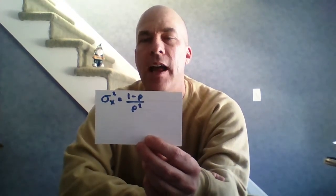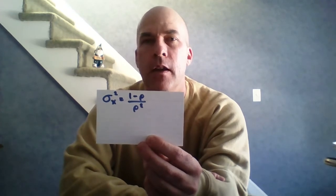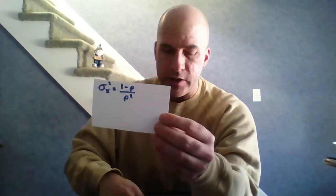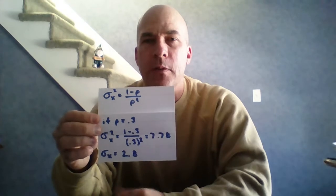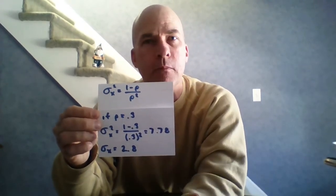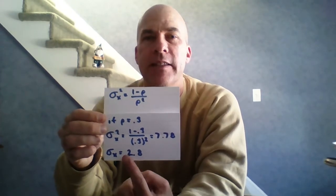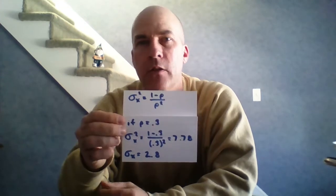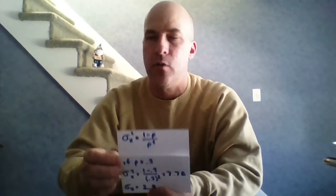We don't have a formula for standard deviation directly, but we have a formula for variance: σ² = (1 − p) / p². With p = 0.3, the variance is (0.7) / (0.09) ≈ 7.78. To get standard deviation, take the square root: √7.78 ≈ 2.8. Verify those in your calculator.